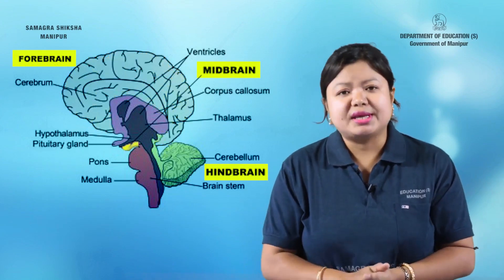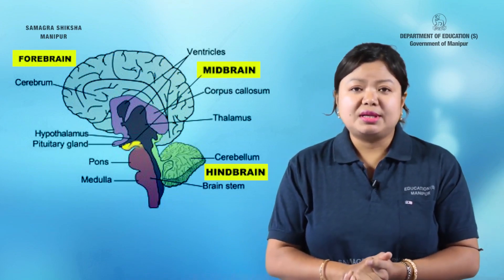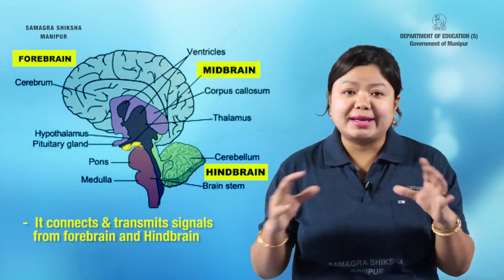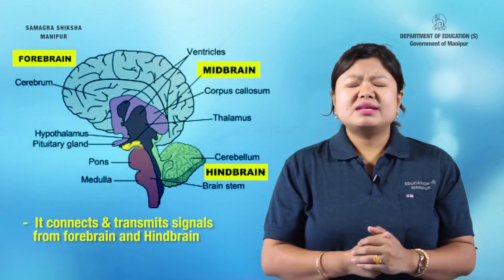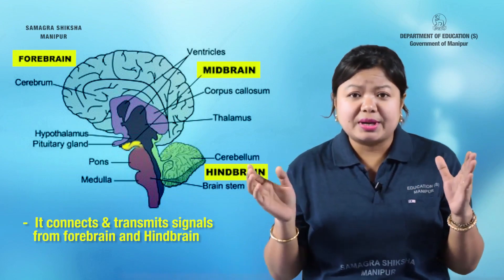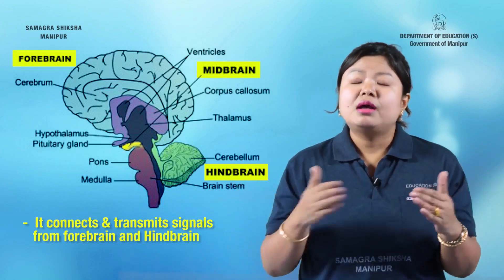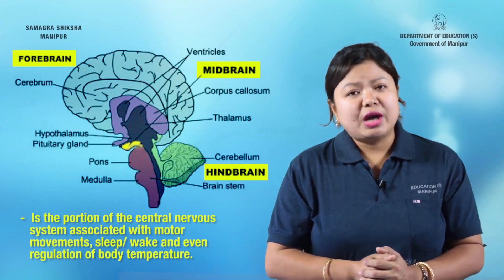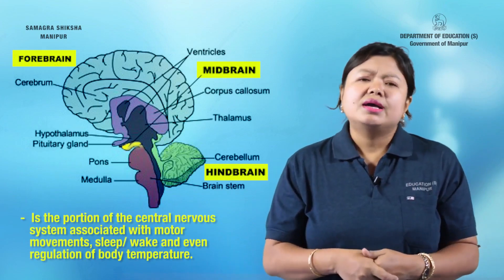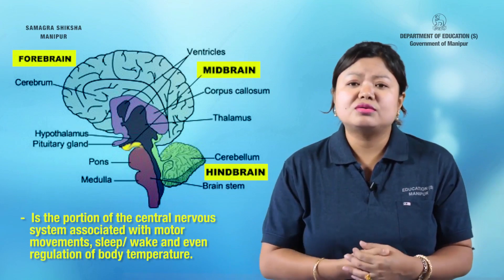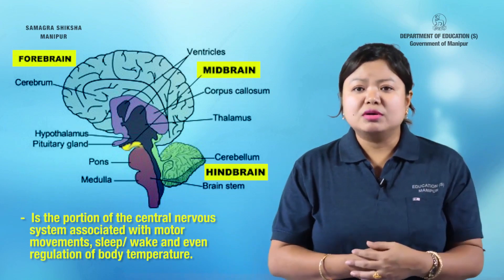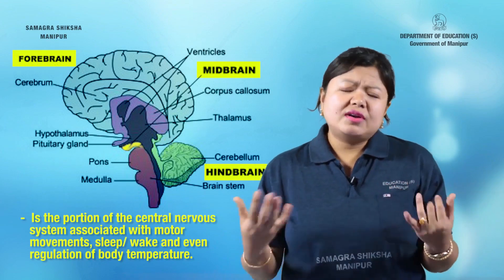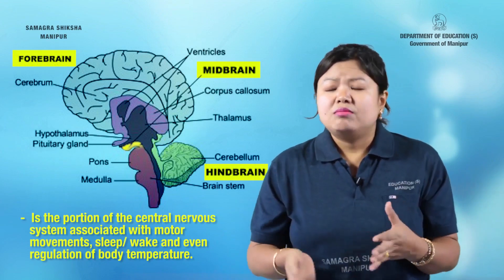The next part of the brain is the midbrain. The midbrain connects the forebrain and the hindbrain, acting as a bridge between them. It is a portion of the central nervous system associated with motor movements. Even body temperature can be regulated by the midbrain.